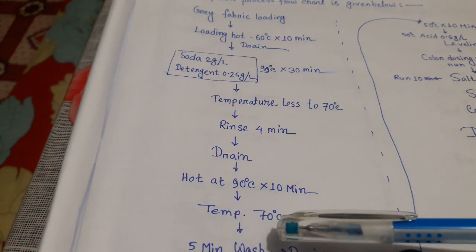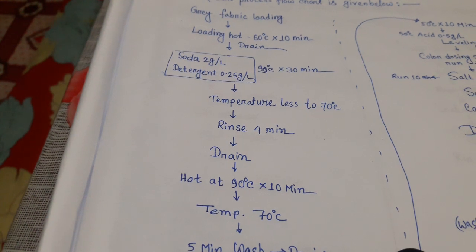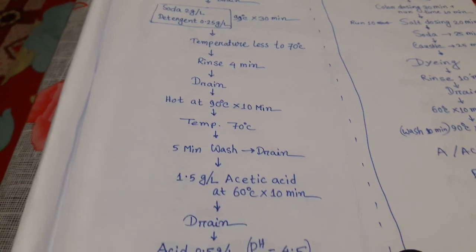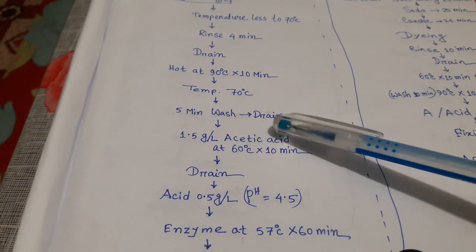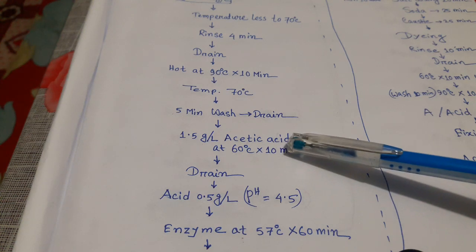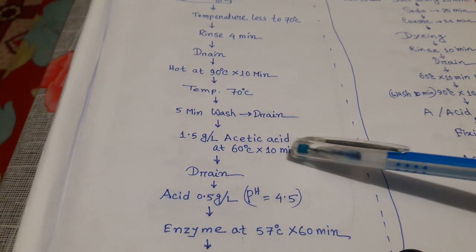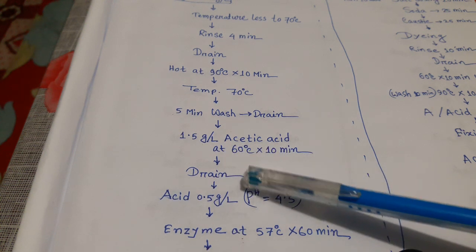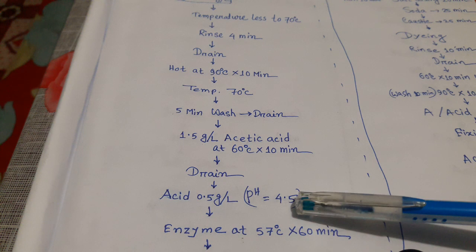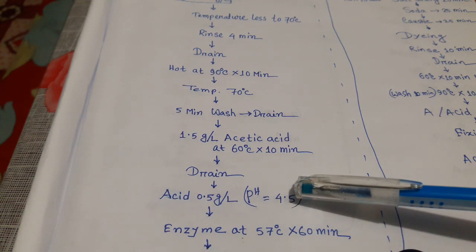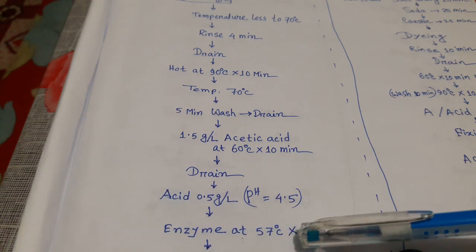Then 5-minute wash and drain. Add acetic acid at 1.5 grams per liter at 60 degrees centigrade for 10 minutes, then drain. Add acid at 0.5 grams per liter to keep pH at 4.5.